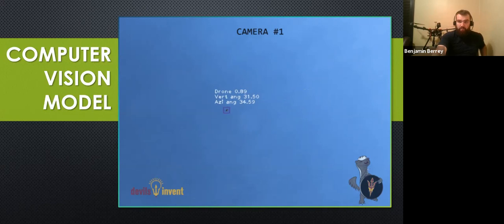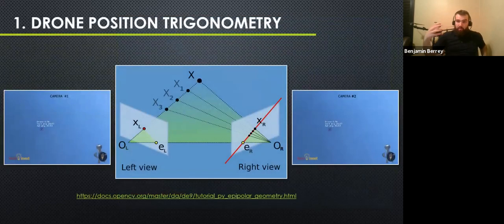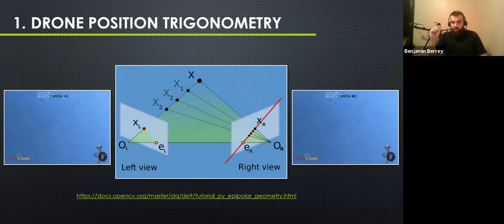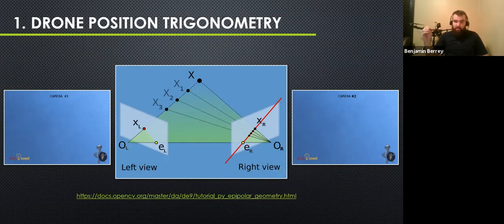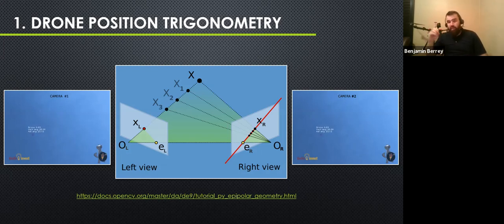Think of each camera as a node, and we have a mesh of nodes — cameras everywhere monitoring high-value targets. Based on all these nodes, we can actually triangulate the position of the drone in the sky. This uses epipolar geometry; OpenCV has developed this technology to estimate the actual distance to a target based on multiple camera angles. It's open source and can be implemented immediately. We implemented the CV2 model on our own trained dataset — we annotated all images, built the dataset, trained on it, and have an active model usable in a live demo.